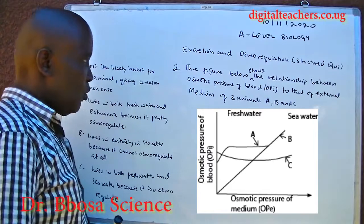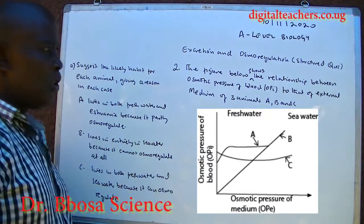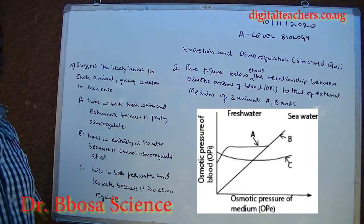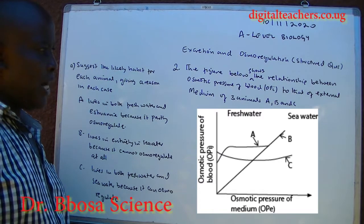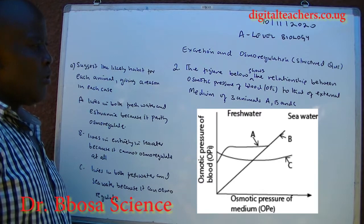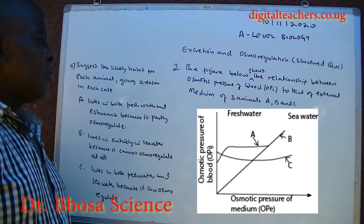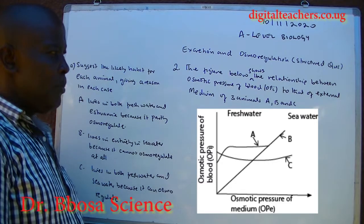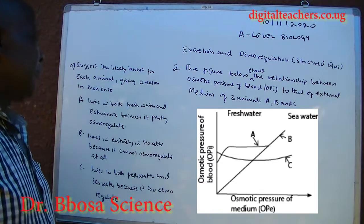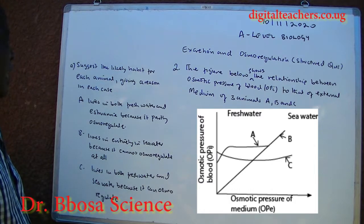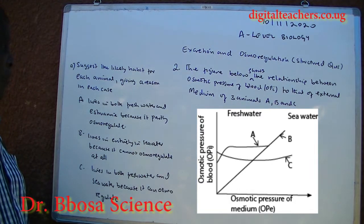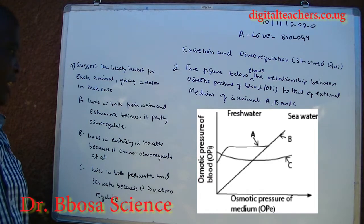Number two: the figure below shows the relationship between osmotic pressure of blood (OPI) to that of external media of three animals — A, B, C. Suggest the likely habitat for each animal, giving a reason in each case.